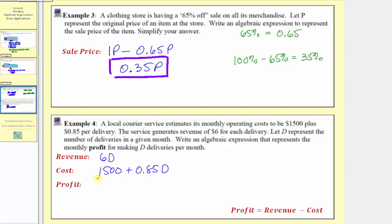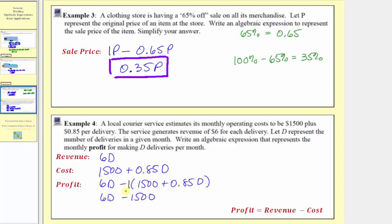Therefore the expression for the profit is the revenue minus the cost, which would be 6d minus the quantity (1,500 plus 0.85d). We need to subtract the entire cost, so we put the cost in parentheses. To simplify, we clear the parentheses by distributing a negative one: 6d minus 1,500 minus 0.85d. We have two like terms — two d terms. So 6d minus 0.85d is 5.15d.